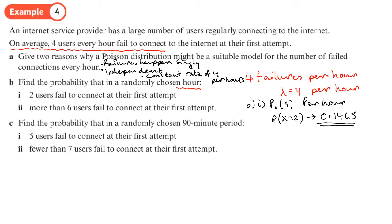Part b or part two of b, more than six users. Okay, so then you want the probability that it's more than six users. Now does it say six or more? No. So does this include six? No. So it's more than six users. So that's going to be one minus the probability that x is less than or equal to six, because we want to find a probability of like seven, eight, nine, ten, and so on.